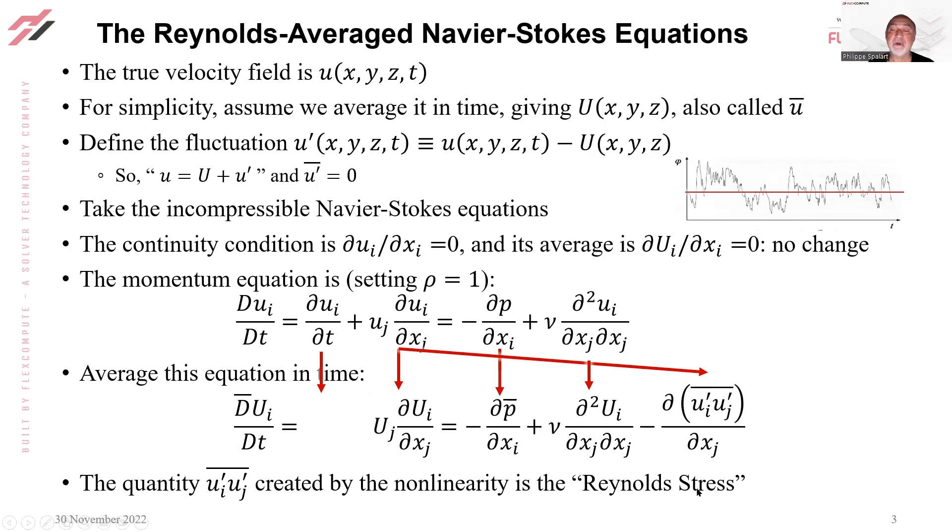It's the entire object of turbulence modeling to represent the Reynolds stress. With my partners at NASA, we did some cases in which we solved this equation for capital Ui and took the Reynolds stress of the DNS, just added it to the right-hand side, and then we got the mean field of the DNS just fine.